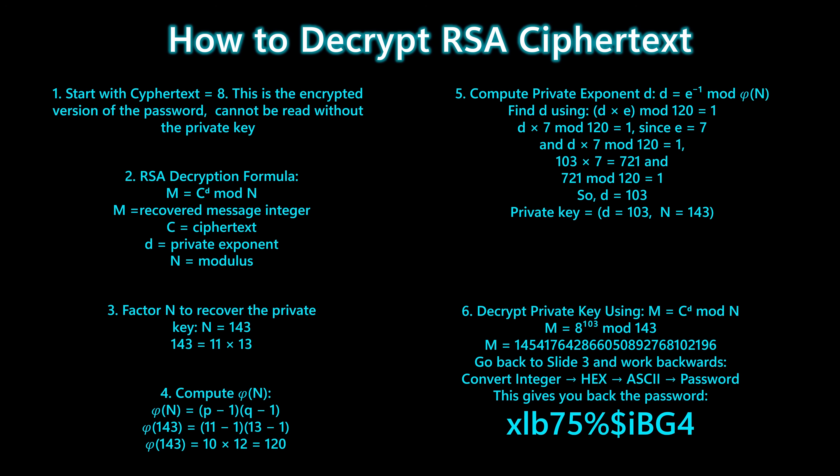The important takeaway is simple: once you factor n, RSA collapses because the private key becomes easy to compute. Shor's algorithm does this factoring step in polynomial time, not in the exponential time required by a classical computer. Now you're starting to see the power of quantum security.